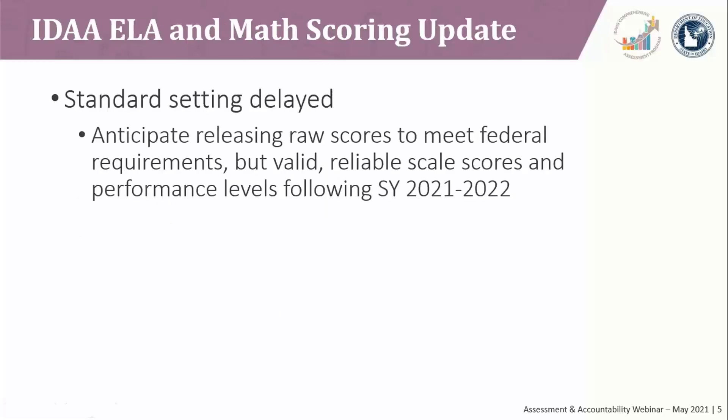We also have an update on the alternate assessments for ELA and math. As we've talked about previously, we originally planned to conduct standard setting this summer so that we could produce scores for the new alternate assessments in these subjects. However, we did have to delay that until next summer so that we would be able to produce valid and reliable scores. Given the ongoing disruptions this year, that seemed like the appropriate course of action. In the meantime, to meet federal requirements, we anticipate producing raw scores for the alternate assessments in ELA and math, and those should be available in the reporting system at the end of the year.